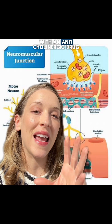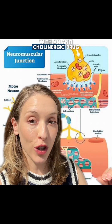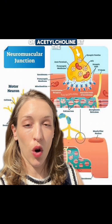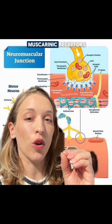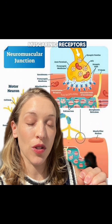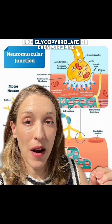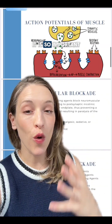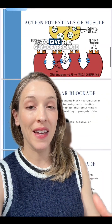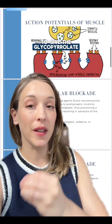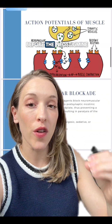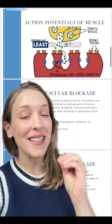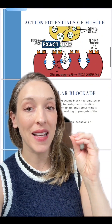We always give neostigmine with an anticholinergic drug that blocks the work of acetylcholine at the muscarinic receptors — like glycopyrrolate or even atropine. It is critically important to give the glycopyrrolate before the neostigmine, or at the very least at the exact same time.